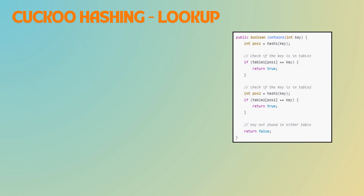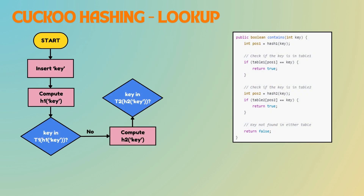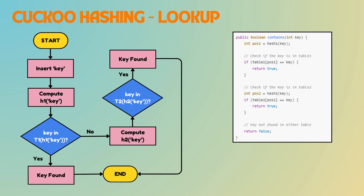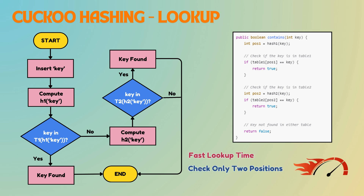Is lookup as efficient as insertion with cuckoo hashing? The lookup process checks whether the key is present in the positions determined by the respective hash functions in both table 1 and table 2. If the key is found in either of these hashed positions, the process returns true; otherwise it returns false. This ensures fast lookup time as only two positions are checked, regardless of the size of the tables.